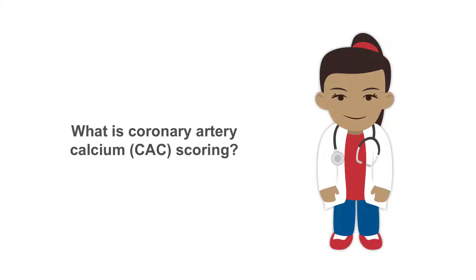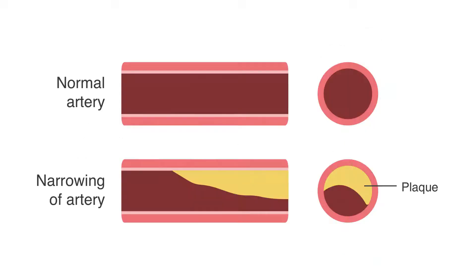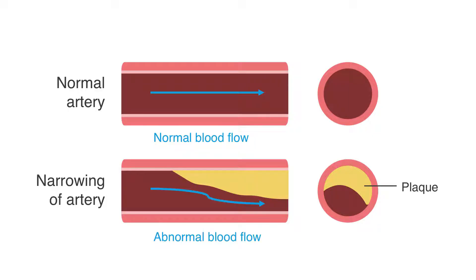So what is coronary artery calcium scoring? If we consider a normal coronary artery, the blood flow is preserved to the heart muscle. When one develops significant plaque, the blood flow to the muscle is compromised and this can become manifest with symptoms of angina.